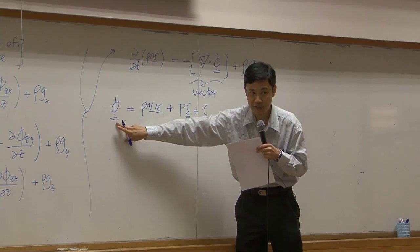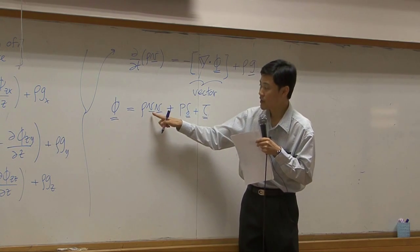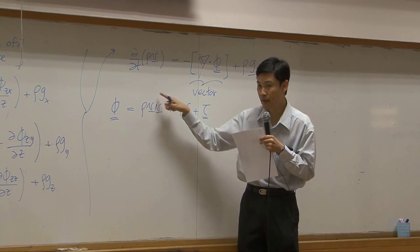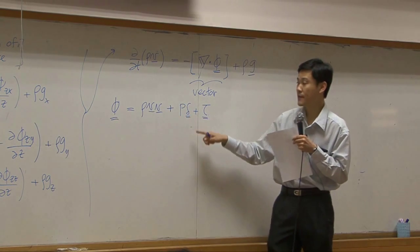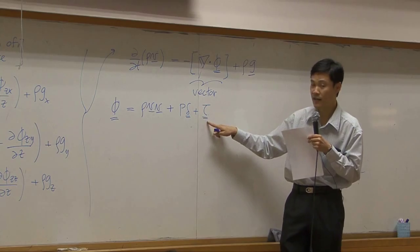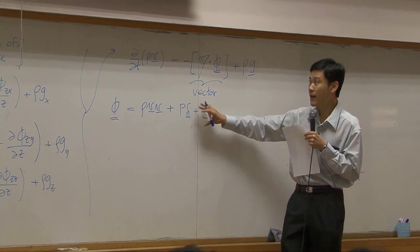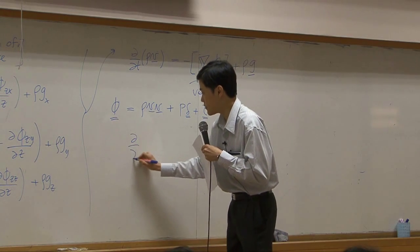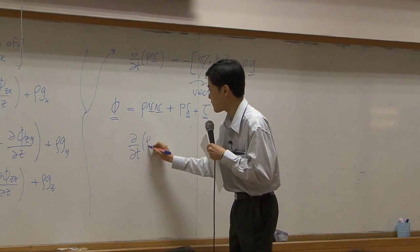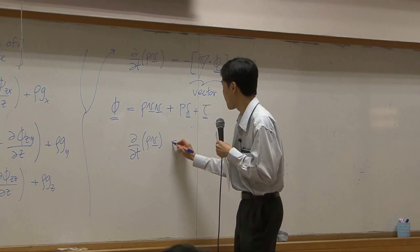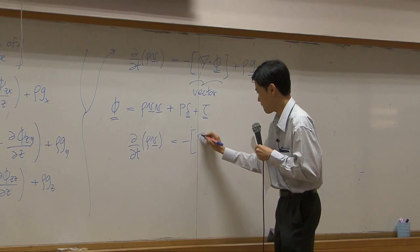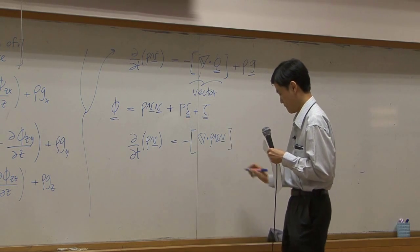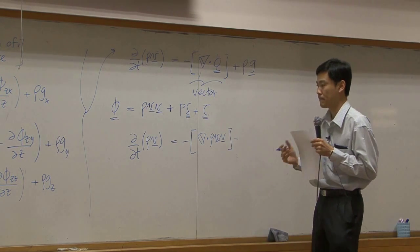This one is tensor. I use two lines. This one is vector and vector combined together. Everything, the whole thing becomes tensor. This is tensor. This is another tensor. If you plug it in here, you get this equation.